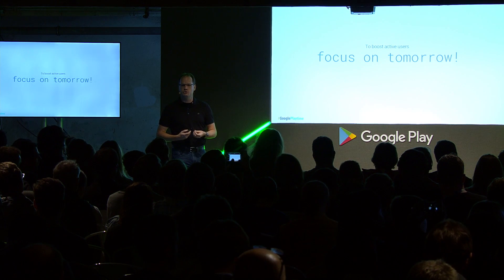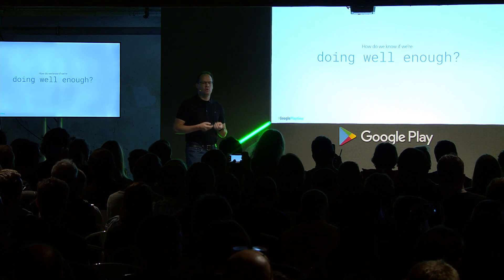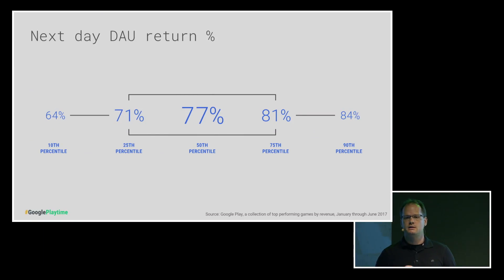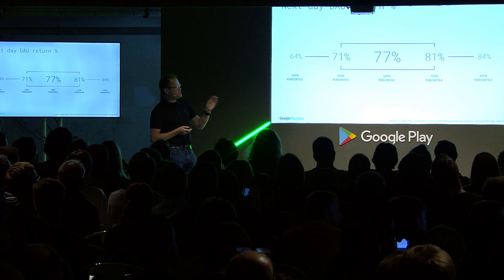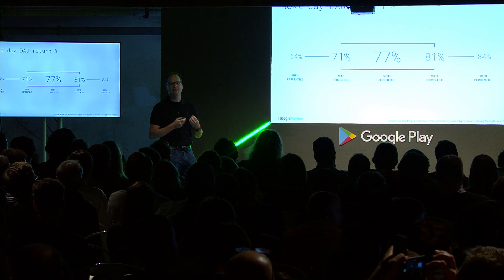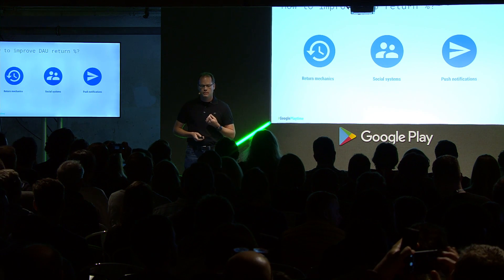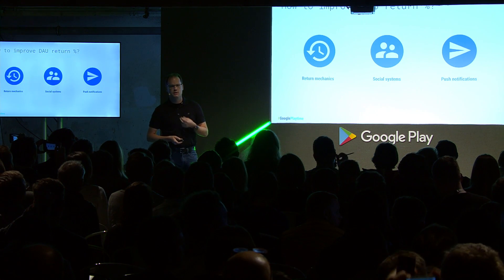It's important to understand how you know if you're doing well enough, especially with this new metric. Looking across the top couple hundred IAP apps, that 77% number is an important one to shoot for, but really shoot for the high side of 84% — try to figure out how to get your users to come back each and every day. A few things worth considering are your return mechanics, your social systems, and your push notifications, because all of these have a huge impact. In the case of return mechanics, let's really celebrate them — make sure users are totally aware of them, that they're aspirational, rewarding, and that users are strongly incentivized to come back each day to receive them.